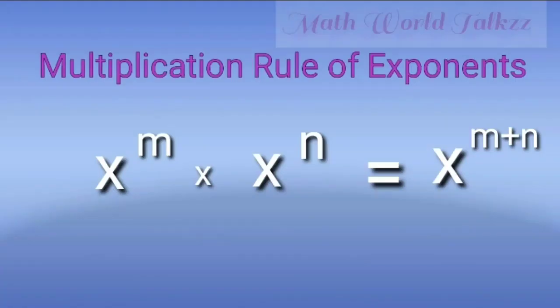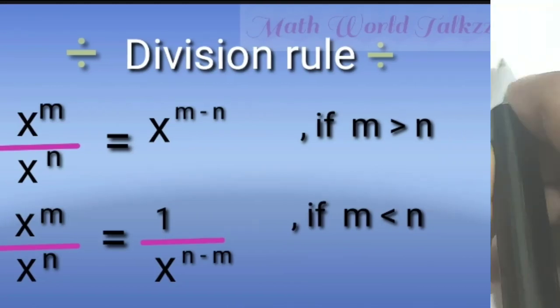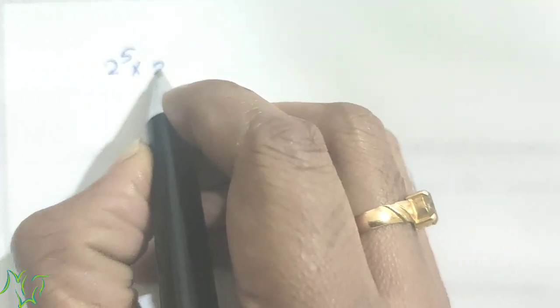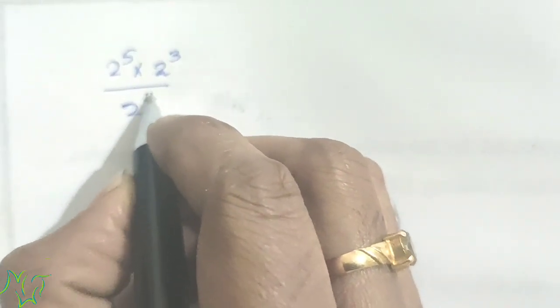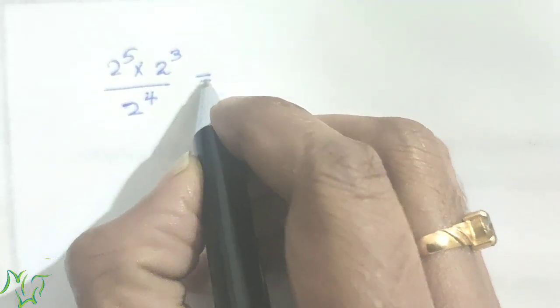Hello children, we have learned the multiplication rule and division rule of exponents. So using these rules we are going to do some problems. We have a question: 2 raised to 5 into 2 raised to 3 by 2 raised to 4.